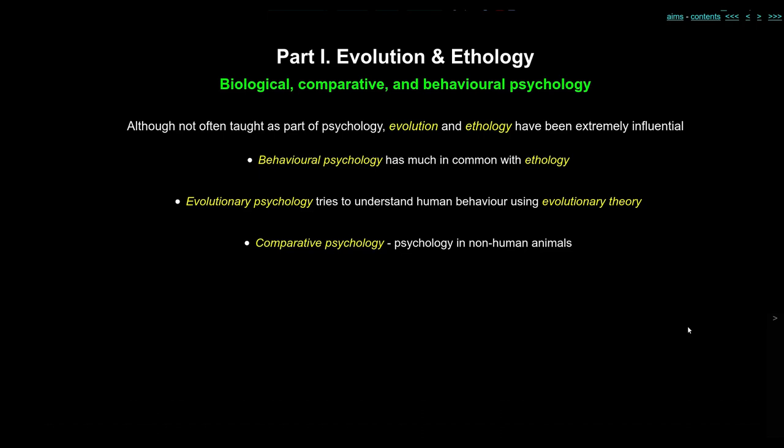Then there's evolutionary psychology — a whole discipline in itself — which tries to understand human behaviour by applying evolutionary theory. And there's comparative psychology, another complete discipline, which does psychology in non-human animals: parrots, crows, chimpanzees, monkeys, chickens. There's an awful lot of psychology which has been done with animals. The influence of evolutionary and ethological thought has really been quite strong in psychology.